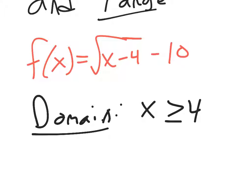There's no restrictions to how high x could go. x could be a billion, a billion minus 4 is still a positive number, and you can take the square root of a positive number, no problem. So this represents our domain.